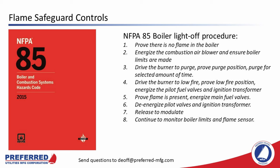NFPA 85 provides very specific rules governing the shutdown, light-off, and monitoring of boilers 12.5 million BTUs per hour and larger. Smaller boilers are covered by CSD1 — controls and safety devices for automatically fired boilers. The two codes are very similar, but if you're going to be working on boilers in these size ranges, you need to know the specifics of both codes.